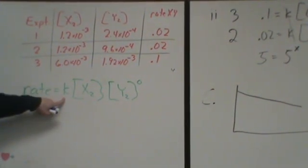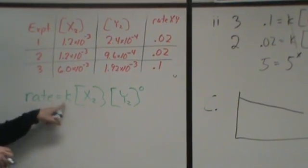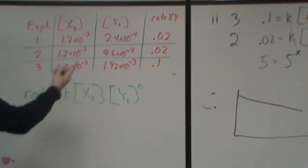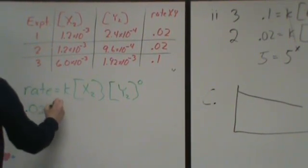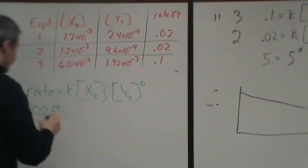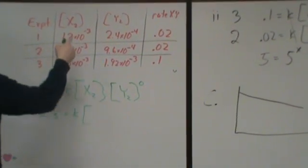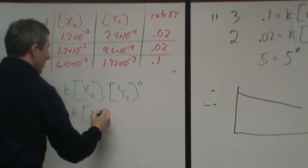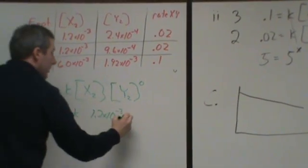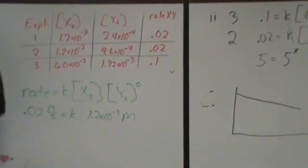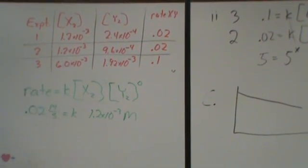Then what we're going to do is we're going to solve for what k is. So to solve for k, we're now going to plug in values from the experiment. Now we know these exponents. So we can actually figure out what this number is. So if we do experiment 1, we've got 0.02. The units on that are molarity per second. It's equal to k. And then x2 is this 1.2 times 10 to the minus 3rd. That's to the first power. And then the y is going to be to the 0 power. So we don't need to write that in.